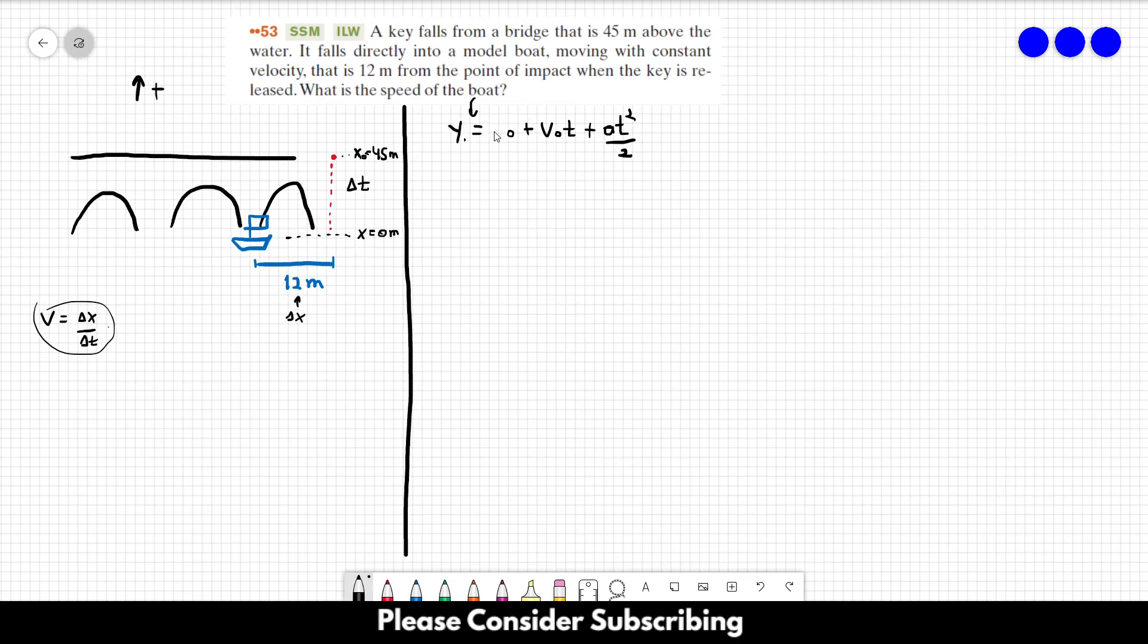So this is y and y₀. This is y₀ and this is y. Okay, so we need to find t. We know that the initial velocity of the key is zero, and the final position of the key is zero as well.